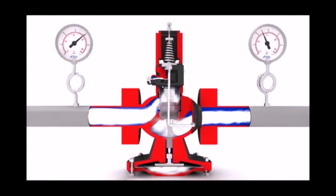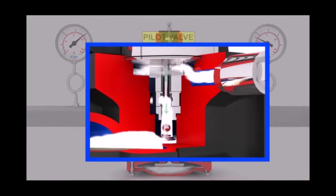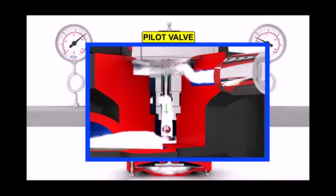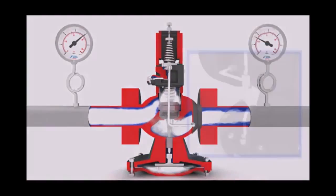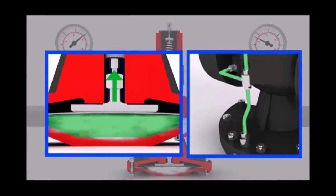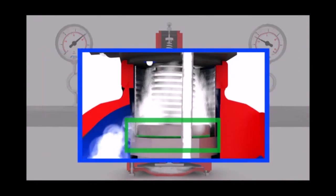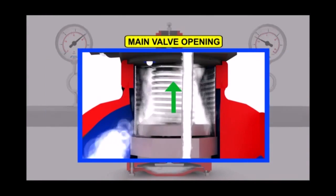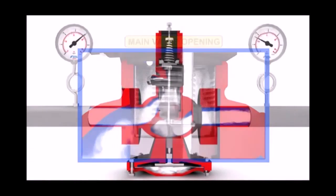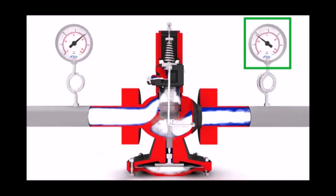A decrease in the downstream pressure caused by an increased steam load will move the pilot valve plunger downward and increase the control steam flow under the main diaphragm, which in turn increases the opening of the main valve and maintains the set downstream pressure.